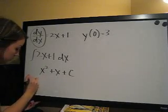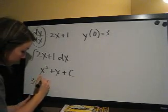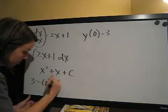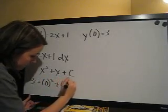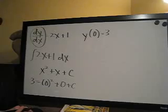You're going to say 3 equals, and then plug in 0 for x. 0 squared plus 0 plus c. So that's all you do to plug it in.